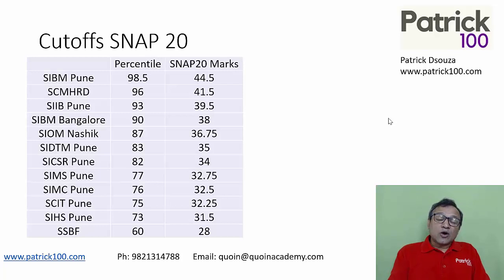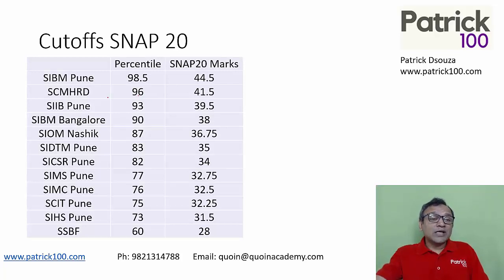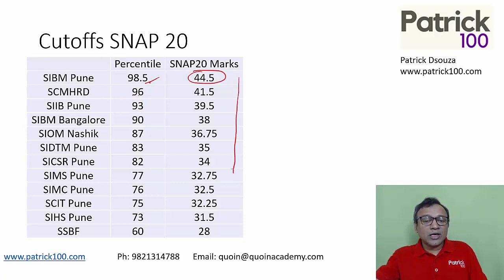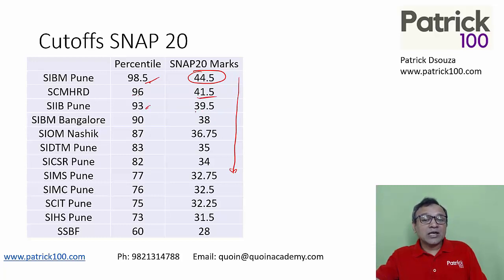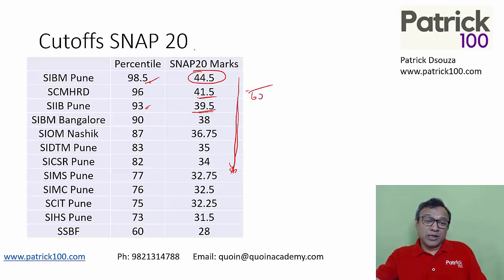For SNAP 2020, two years back, the cutoff for SIBM Pune was around 98.5 percentile, around 44.5 marks. The SMHRD cutoff was 96 percentile at 41.5 marks. SIB was 93 percentile at 29.5 marks. These were the marks required out of 60 to clear the cutoff in SNAP 2020.